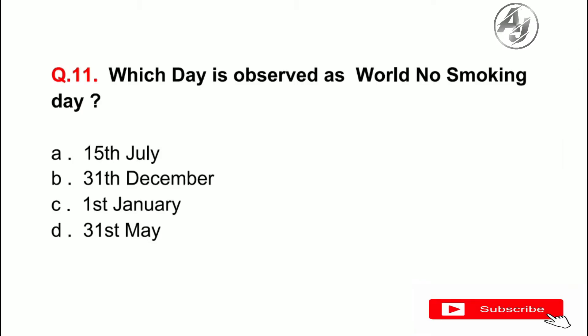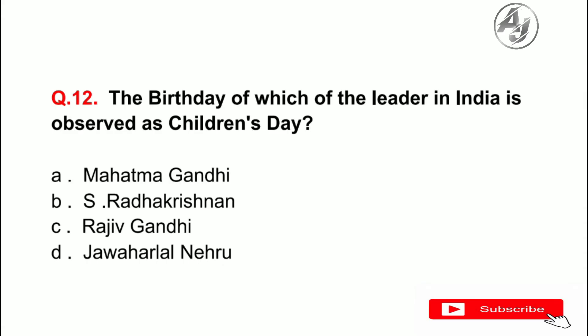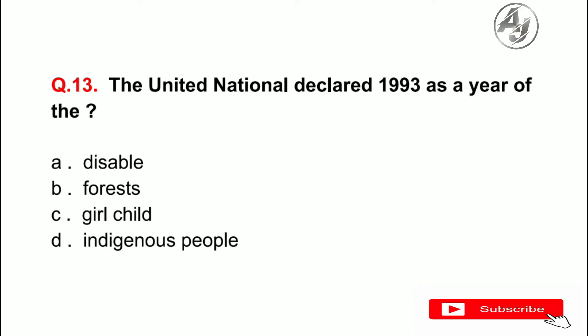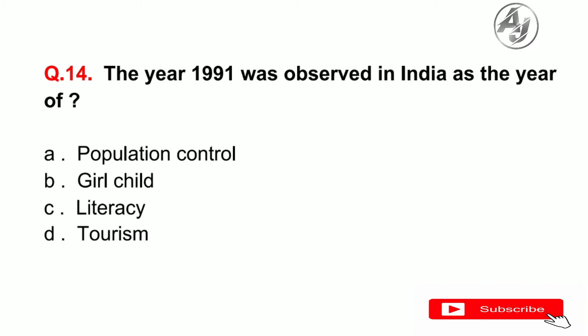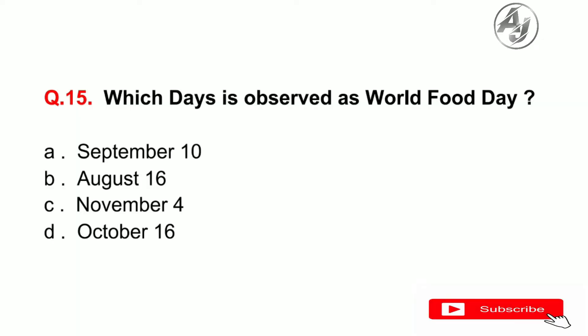Question number 11: Which day is observed as World No Smoking Day? The answer is D — 31st May. Question number 12: The birthday of which leader in India is observed as Children's Day? The answer is D — Jawaharlal Nehru. Question number 13: The United Nations declared 1993 as the year of — the answer is D — Indigenous People. Question number 14: The year 1991 was observed in India as the year of — the answer is D — Tourism.